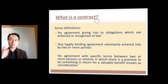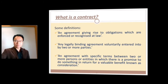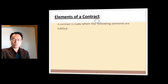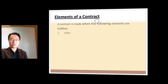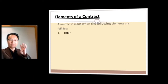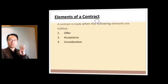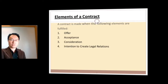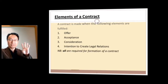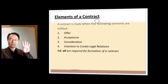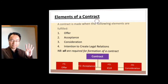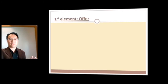What you really want to know is what do you need in law to have a valid contract? There are four things you need: offer, acceptance, consideration, and intention. You need all four of these to form a contract. So let's go into them one by one.